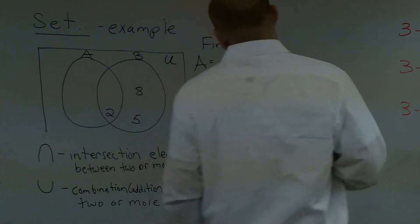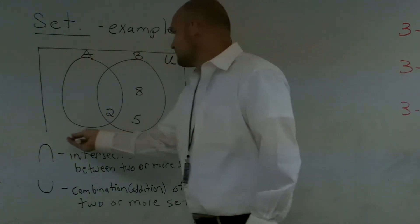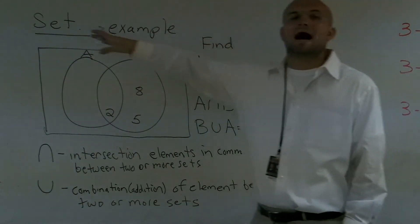All right, now what I'd like you guys to do is show me an example of a Venn diagram. In this example right now, if you guys remember, we have a universal set, which is the box.